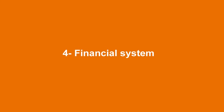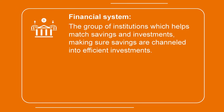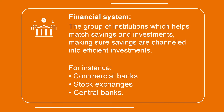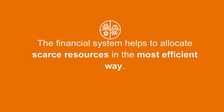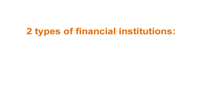Savings turn into investments when they go through the financial system. The financial system is the group of institutions that helps match savings and investments — for instance, commercial banks, stock exchanges, and central banks. In this way, the financial system helps to allocate scarce resources in the economy at any given time in the most efficient way. There are two main types of financial institutions: financial markets and financial intermediaries.